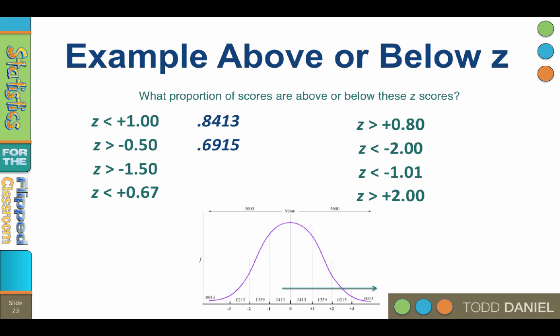What proportion of the scores are above a negative 1.50? 0.9332.